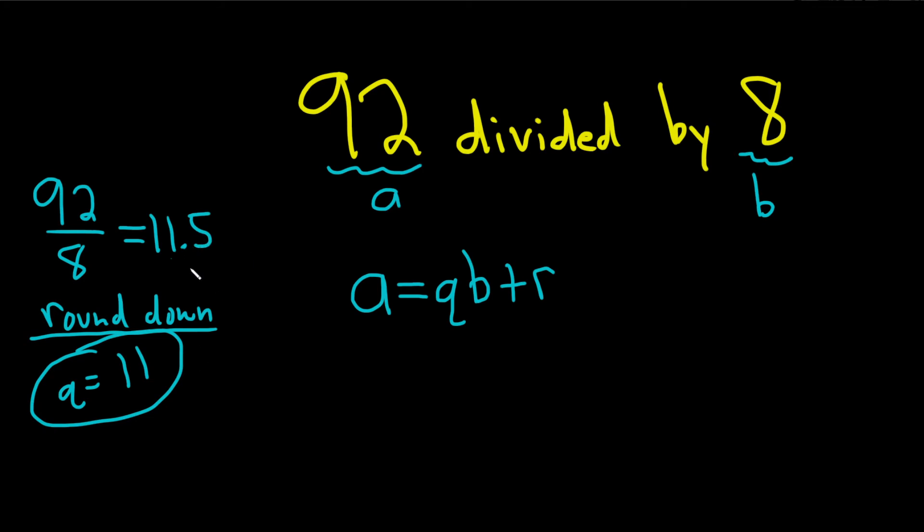You got to be careful when it's negative, right, because you're still rounding down. So like if it was negative 12.2 and you round down it becomes negative 13. So you got to watch out for that. But otherwise it's not too bad.